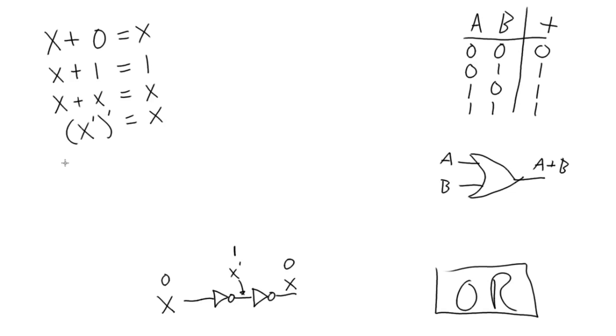And then our last one is X OR'd with X not equals 1. So hopefully this one seems reasonably intuitive as well.